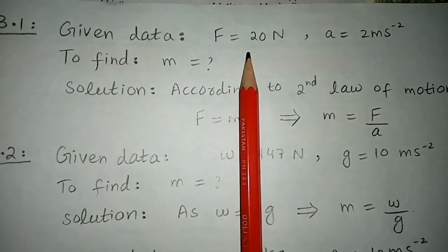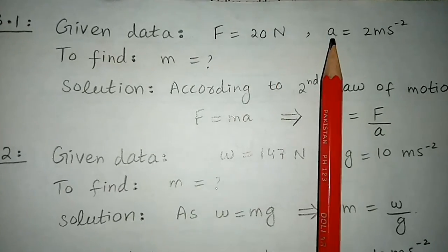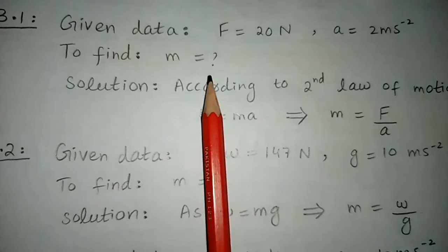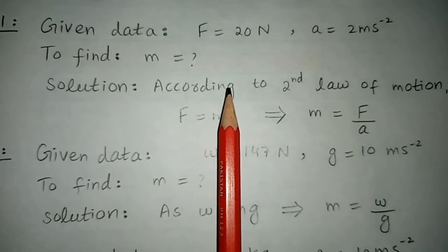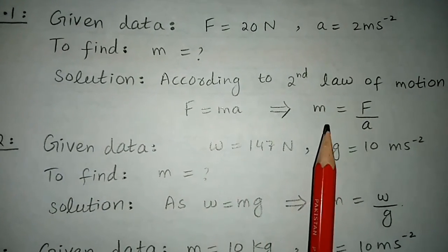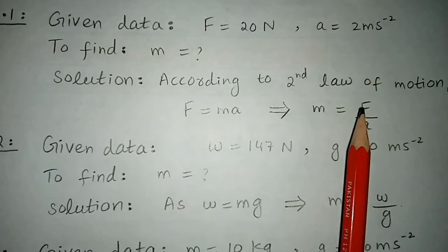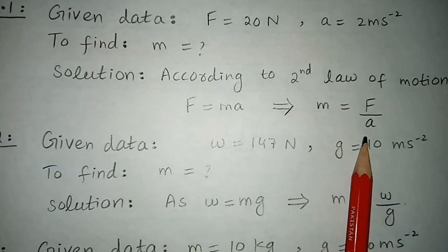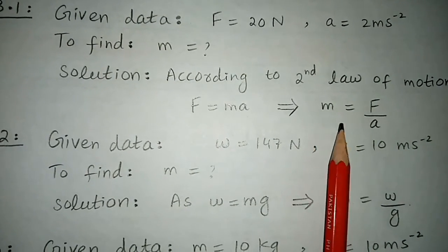Students, given data: force F equals 20 newton, acceleration equals 2 meters per second square, and we have to calculate the mass. According to Newton's second law of motion, we know that F equals ma. Rearranging the equation for mass, m equals F over a. Simply use the force and acceleration values and the mass value will be calculated.